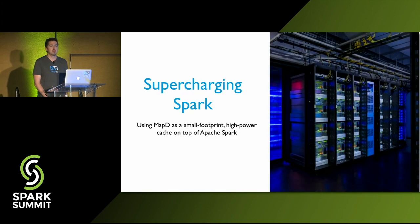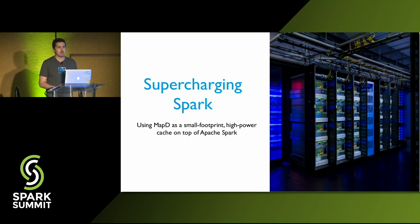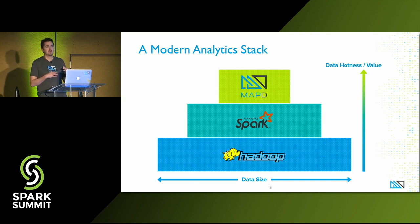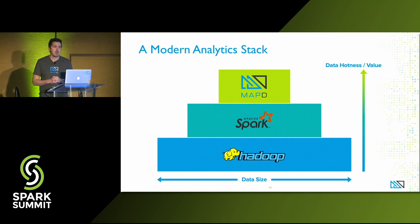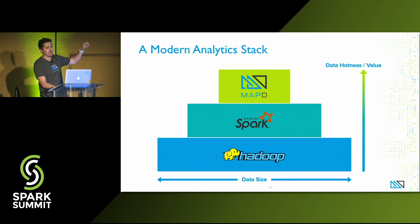Talking about Spark: one of the major use cases we see from customers running big Spark clusters is that even though Spark is relatively fast compared to Hadoop — orders of magnitude improvement — once datasets get big enough, it's difficult to do real-time analytics in Spark. We see a modern analytics stack where your data lake is ultimately on Hadoop, you pull higher-value data for in-memory processing into Spark, and then you can pull those RDDs right into MapD through JDBC. That's your highest-value data where you need sub-second response time over billions of rows.